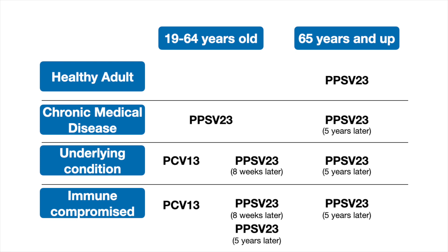In 2021, the Advisory Committee on Immunization Practices, also known as the ACIP, approved two new pneumococcal vaccinations — PCV15 and PCV20 — which made new recommendations much easier.